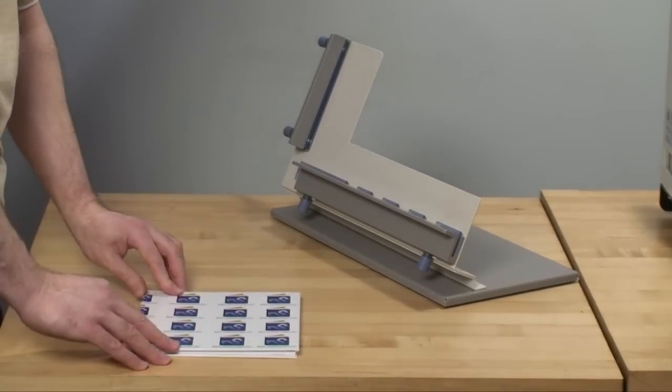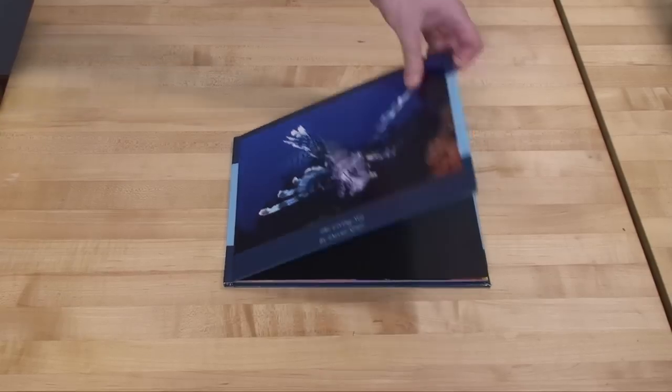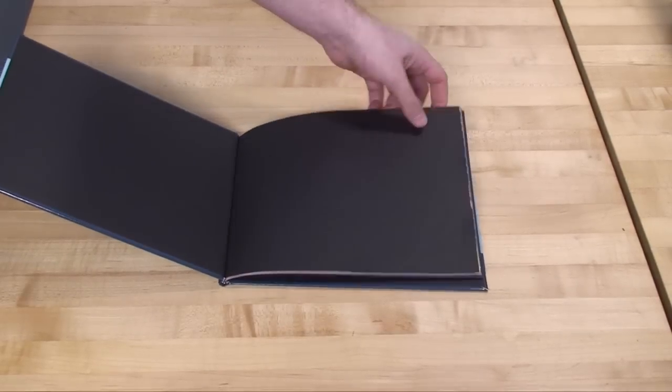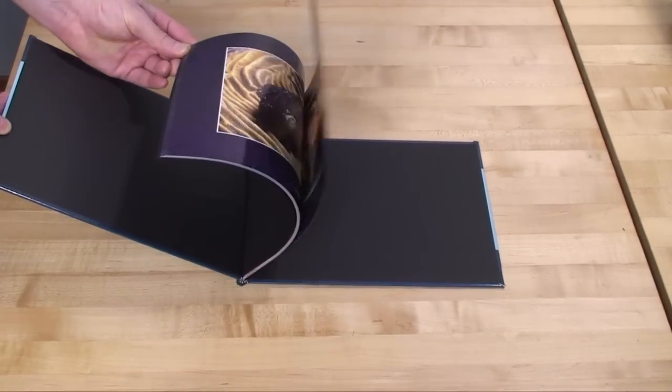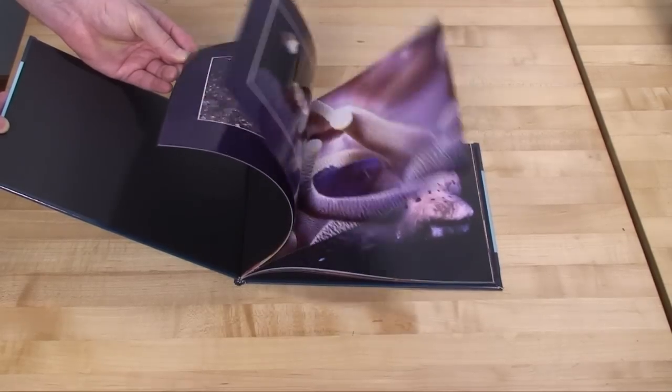You now have a case bound book. Here is a sample of a case bound photo book. The book block is bound on the sterling digi binder and then cased in.